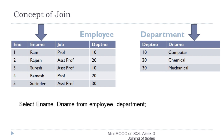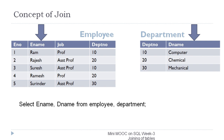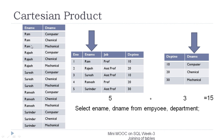If we execute this statement, Oracle internally performs a Cartesian product. This means the first record of the employee table will make a pair with every record of the department table — first, second, and third — making three pairs. Similarly, each of the five employee records will make three pairs with all records of the department table. So five records from the employee table paired with three records from the department table produce 15 records in the output — all possible combinations of ename and dename. This is the concept of Cartesian product.